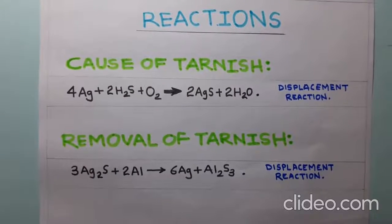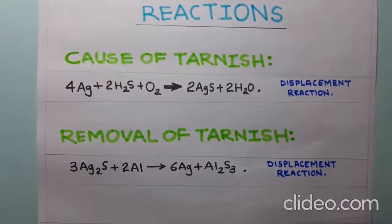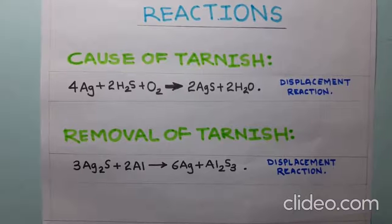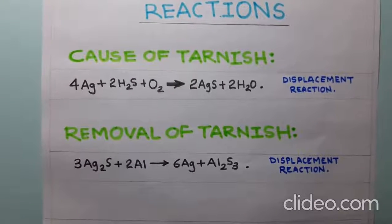Now, we will see the reactions involved in this experiment. Cause of tarnish: The silver object comes in contact with hydrogen sulfide and oxygen gases present in the atmosphere and causes a black layer which is the tarnish.